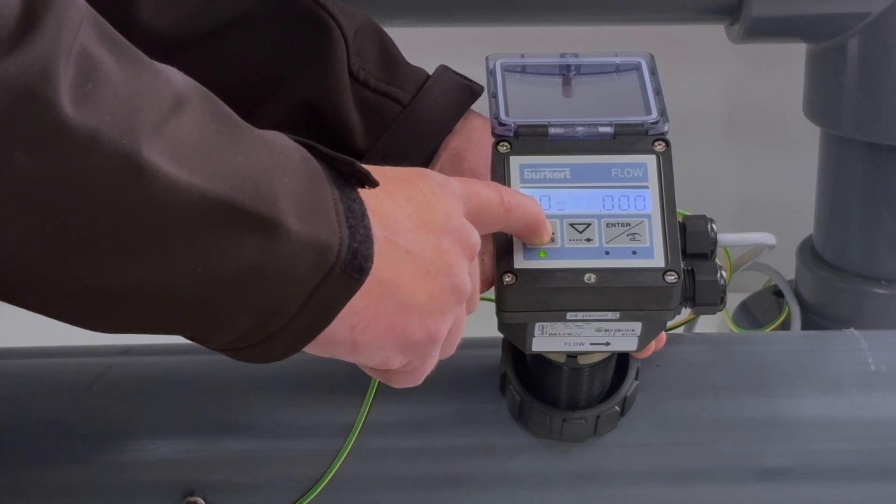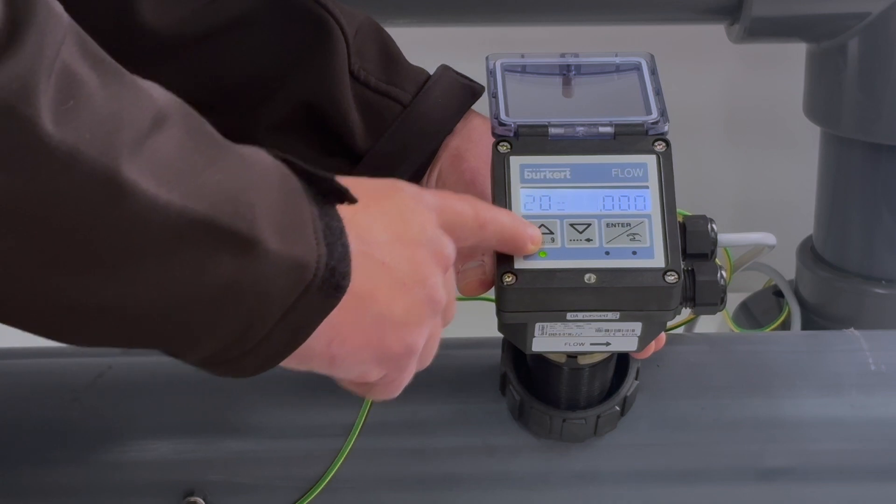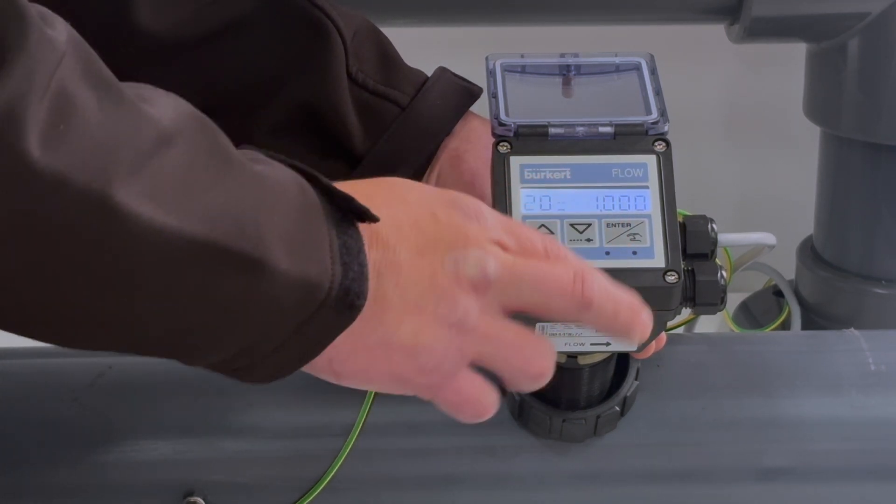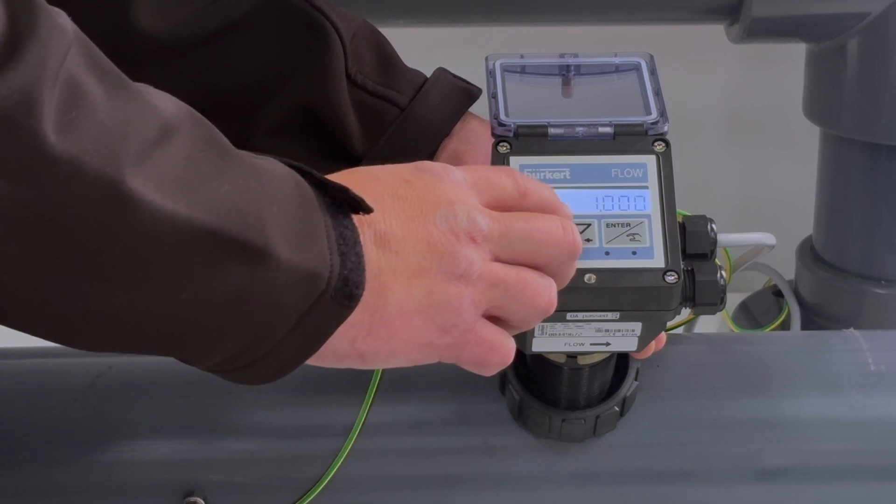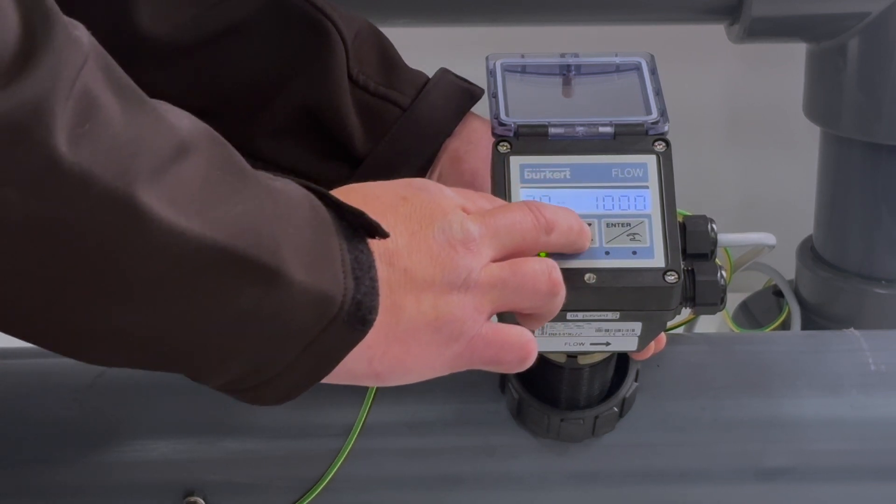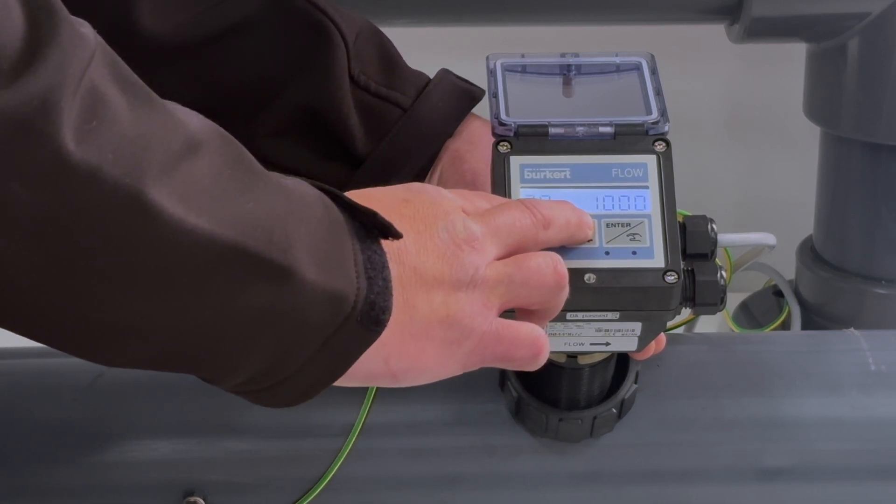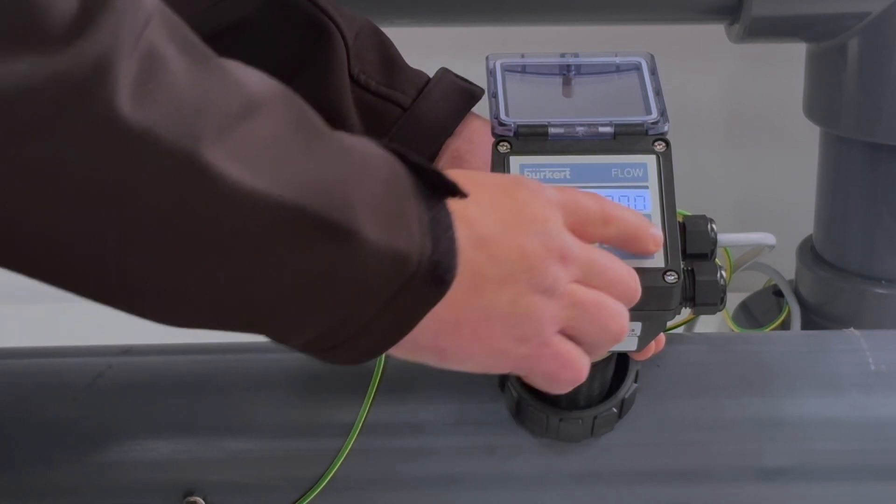My 20 milliamp value I'm going to set by pressing the middle button over. I want to set this to 100. As you can see, our decimal point is only at 1.00. I can change this by momentarily pressing the up and down buttons and changing my decimal point. I'm going to set this one for 100.0.